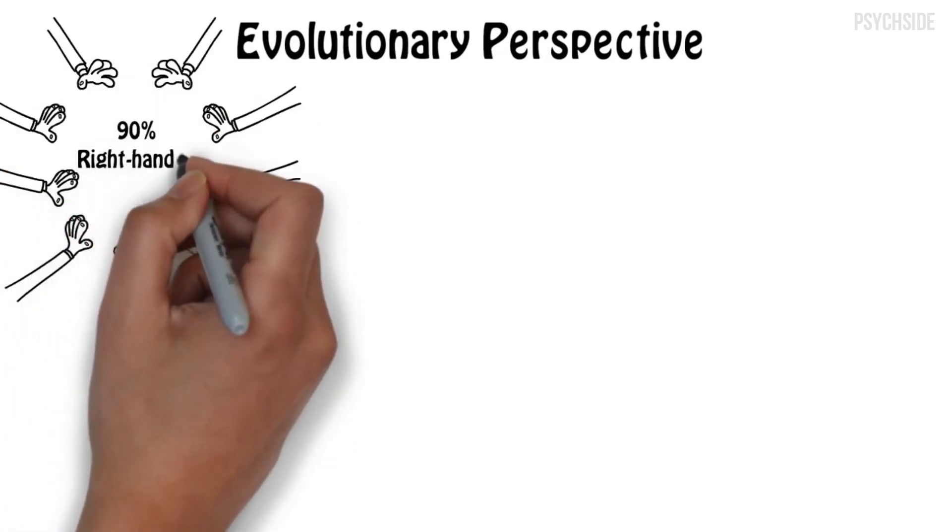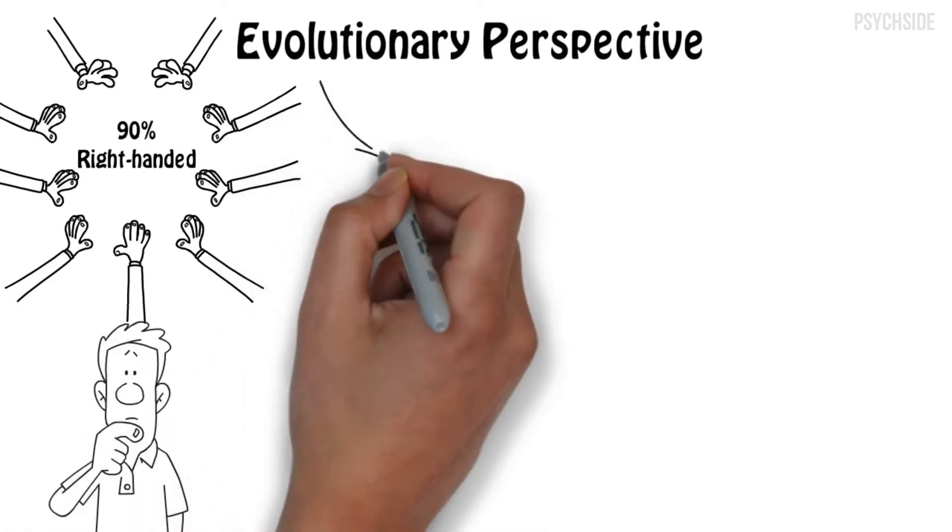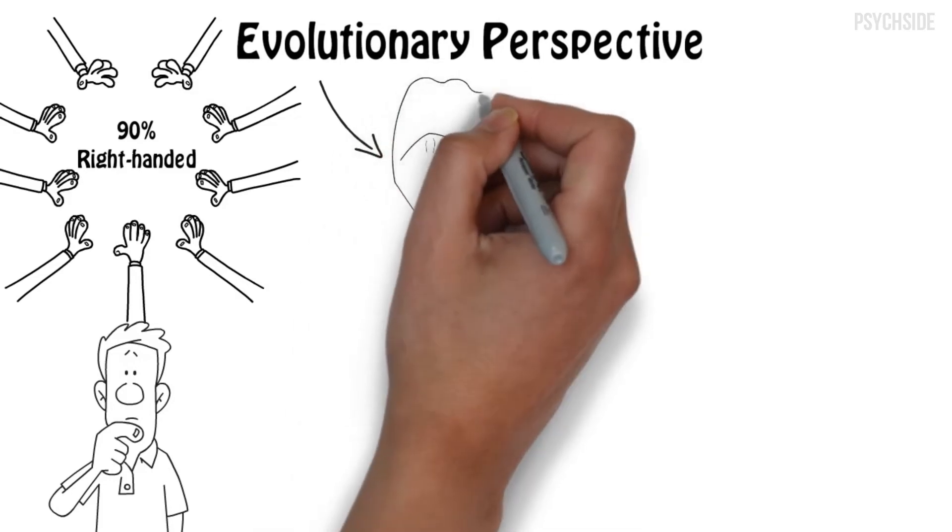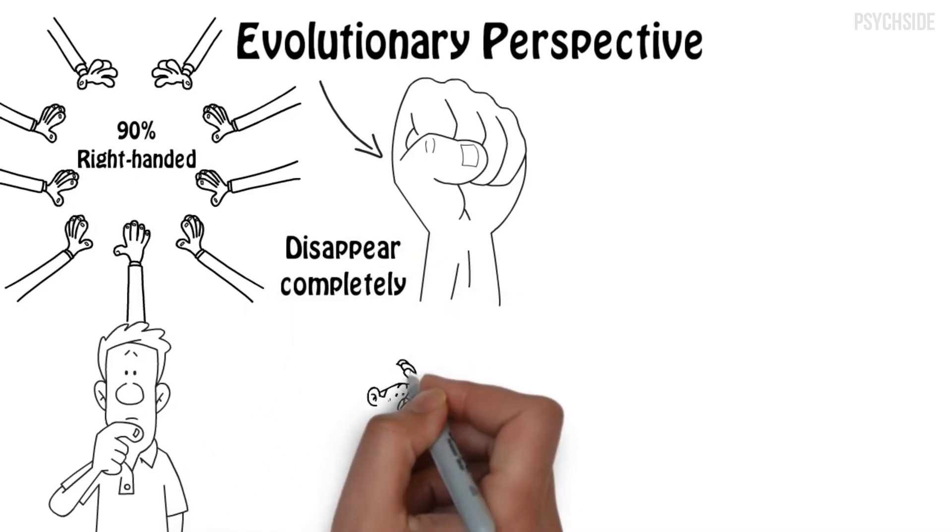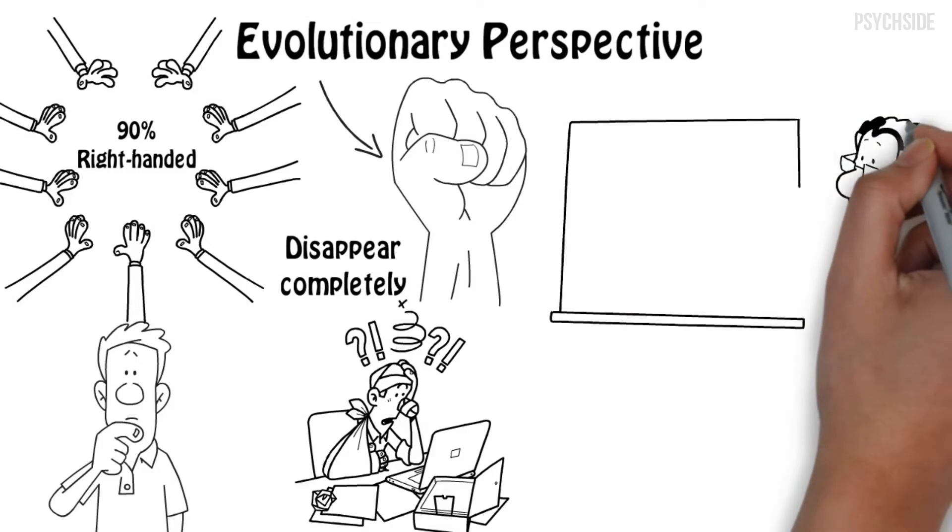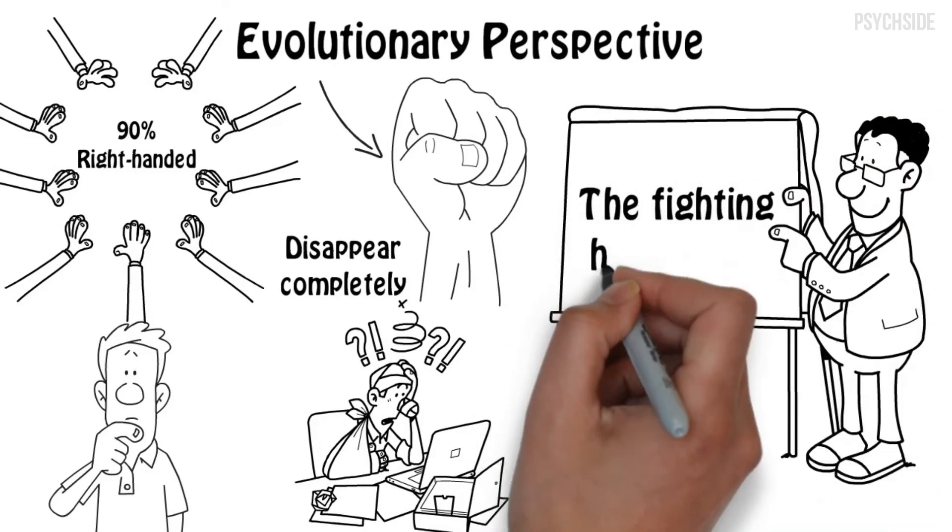From an evolutionary perspective, right-handed people account for 90% of the population. What caused our extreme bias toward right-handedness to evolve and persist? If right-handedness evolved because it had some kind of advantage, then you might expect left-handers to disappear completely. There are some disadvantages to being left-handed, such as higher frequencies of work accidents. But there is a leading theory to explain why left-handers have maintained a constant minority: the fighting hypothesis.